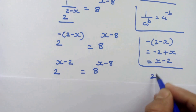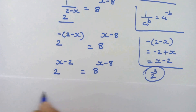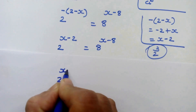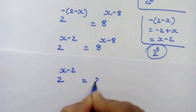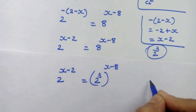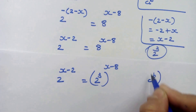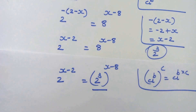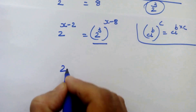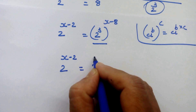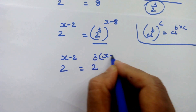Now 8 is 2 cubed. So our next step is 2 raised to x minus 2 is equal to 2 cubed whole raised to x minus 8. If we have a raised to b whole raised to c, then we can write it as a raised to b into c. By using this rule, here we can write 2 raised to x minus 2 is equal to 2 raised to 3 into x minus 8.